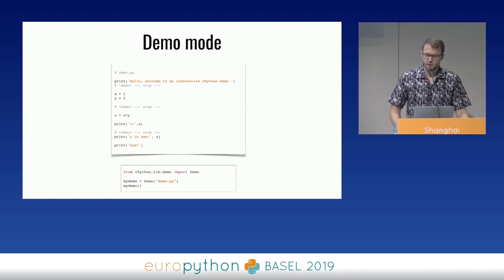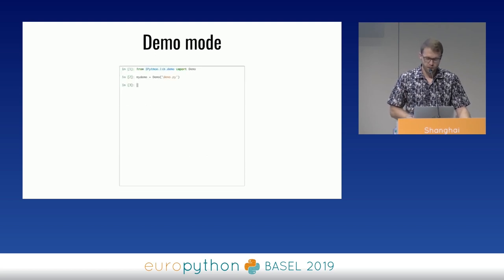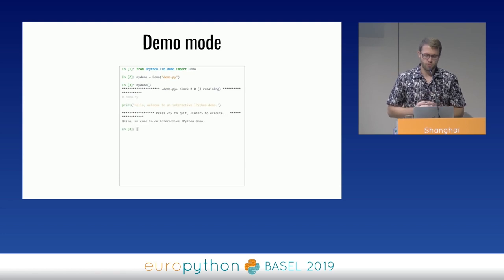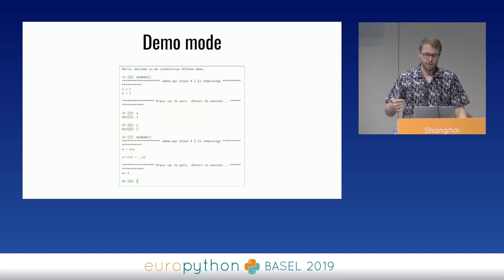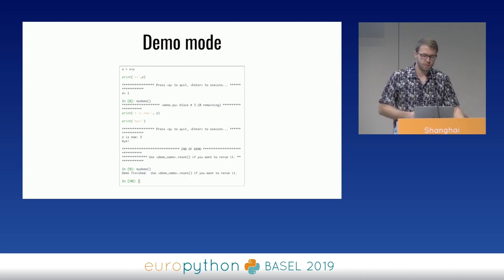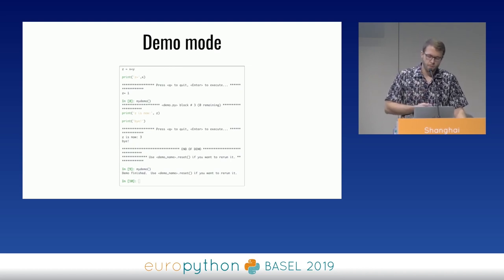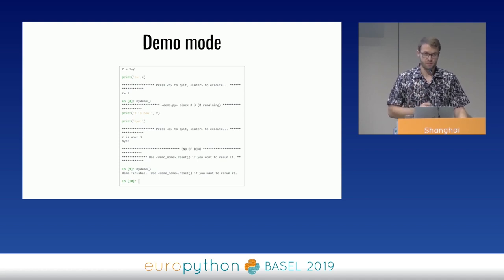There is also a demo mode in IPython. To use it, create a Python file with some simple markup in the comments, then load that file into a demo object. Each time you call the demo object, IPython will execute the next block of code from the demo in the current namespace, giving you access to all variables and functions created in that block before executing the next one. Demo mode is similar to Jupyter Notebooks — for a presentation I'd stick to Jupyter so people can see the code — but if you live in the terminal and want to impress colleagues with a cool coding demo, this is a great tool.